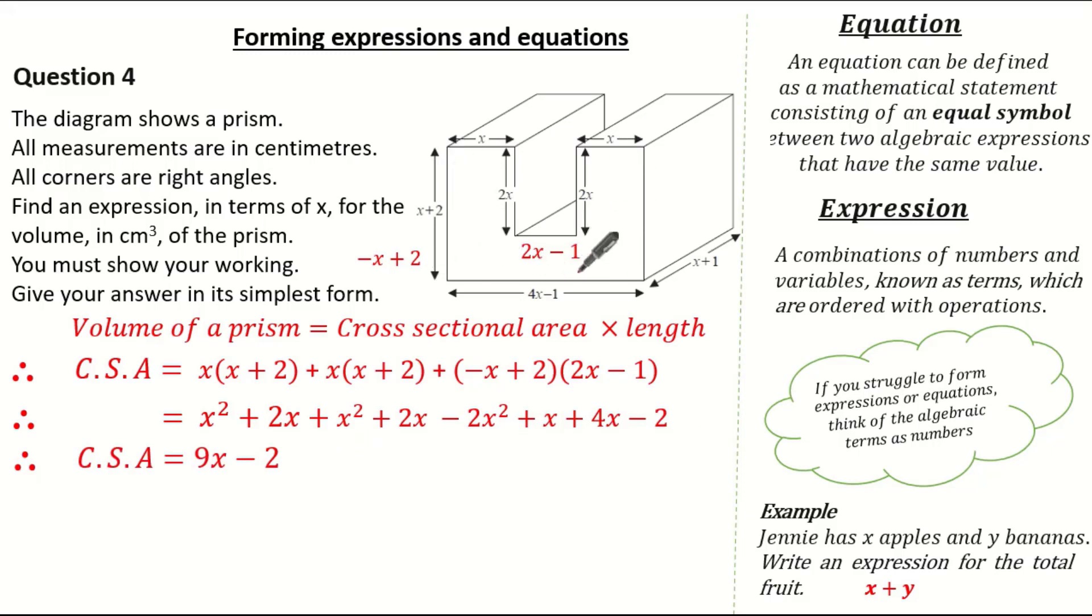But remember, the question wanted me to find the volume. So it's cross-sectional area multiplied by the length. So I need to multiply this cross-sectional area by x plus 1. So to work out the volume, it'd be 9x minus 2 multiplied by our x plus 1. Expanding out, 9x times x is 9x squared. 9x times 1 is 9x. Minus 2 times x is minus 2x. And minus 2 times 1 is minus 2. Giving my answer in its simplest form means the volume of our prism is 9x squared plus 7x minus 2.